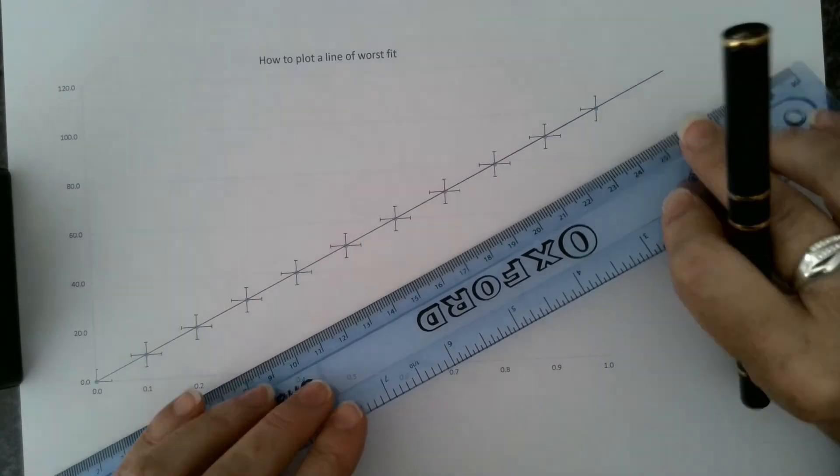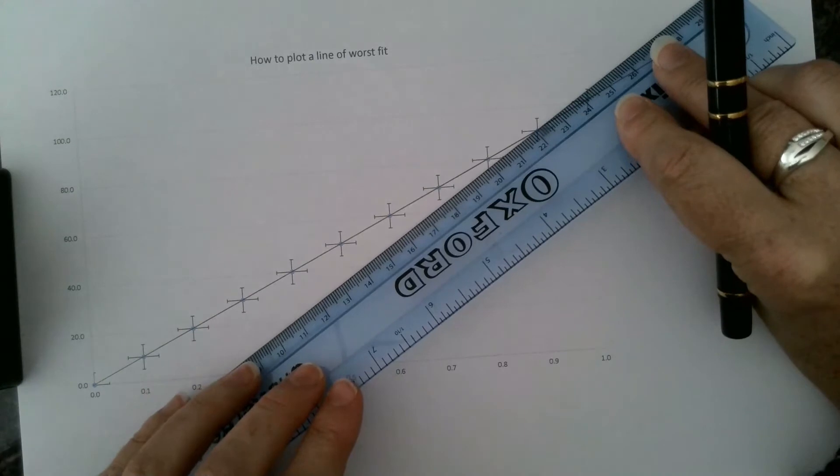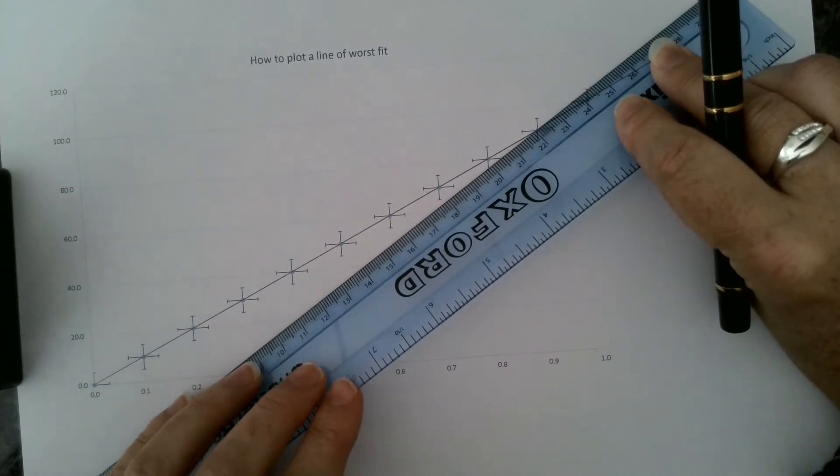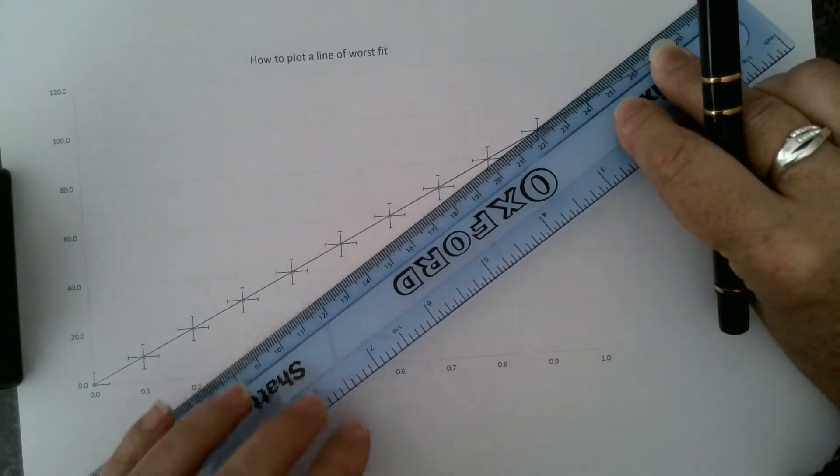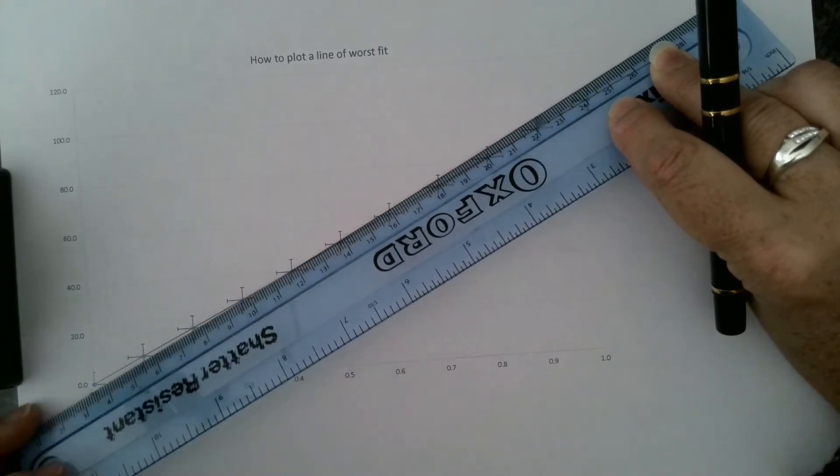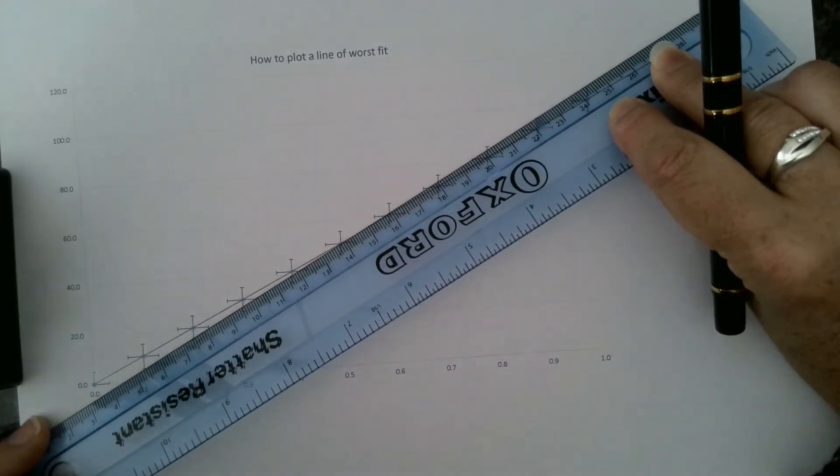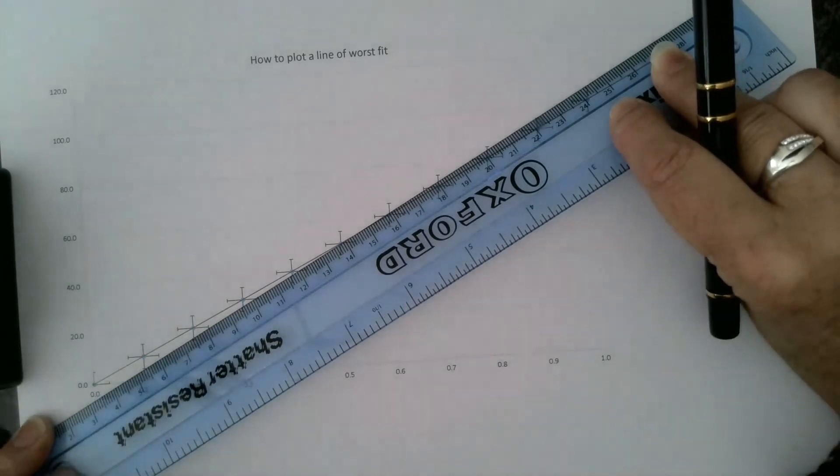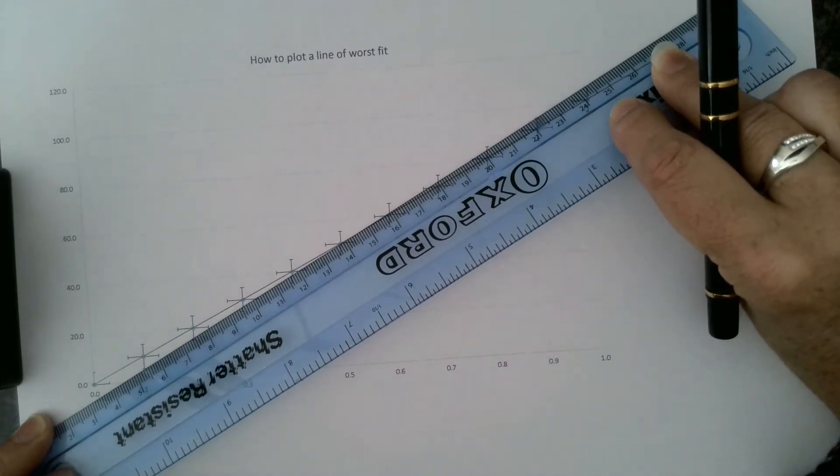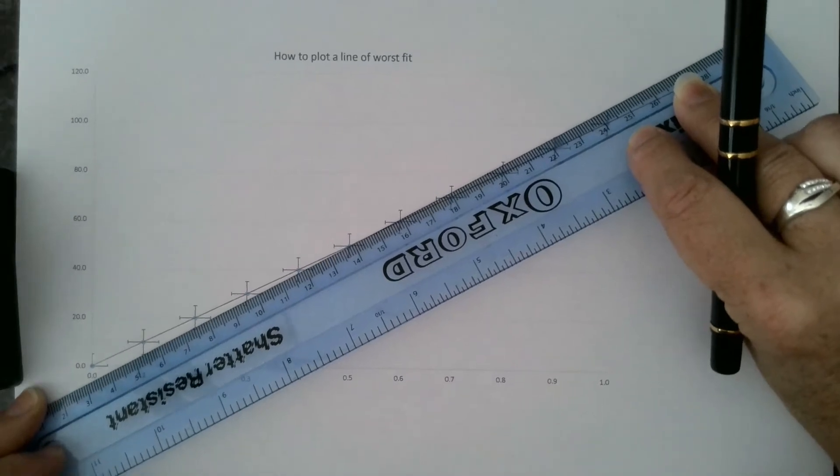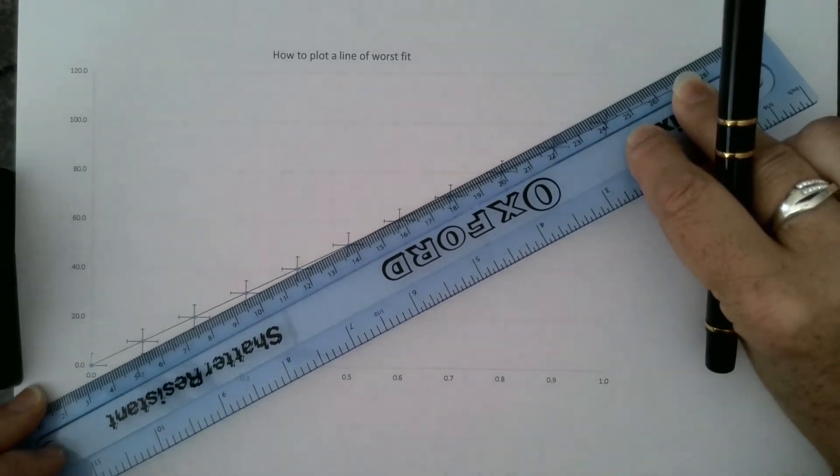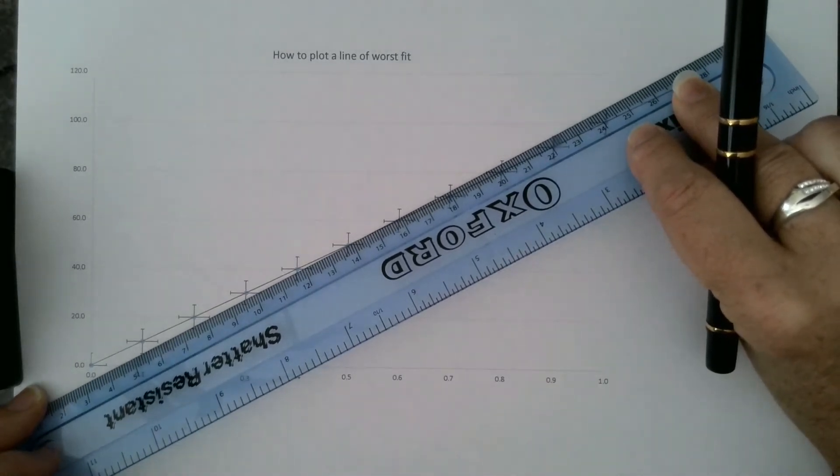What I've seen some people do is go from the top of the error bar on the final point to the bottom of the error bar on the lowest point. In theory, on this data, that would work because it's all really even. However, data you're collecting in class and in real life isn't even.